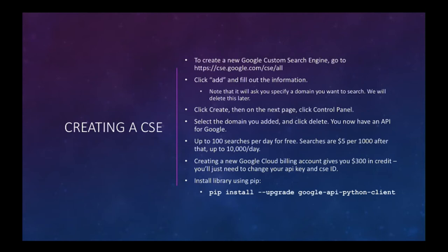To create this, you go to the CSE website, click Add, fill out the information, click Create, then go to the control panel and delete the domains you specified at the beginning. Now you have an API for searching all of Google. There is a cost: it is 100 searches per day for free, then $5 per thousand searches up to 10,000 a day. The Google Cloud billing account will give you $300 in free credit every time you create a new account. So if you find yourself hitting limits, just create new accounts and switch out the API key and CSE ID — you've got $300 each time.